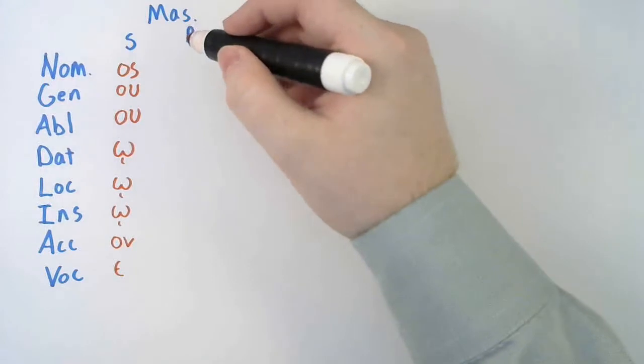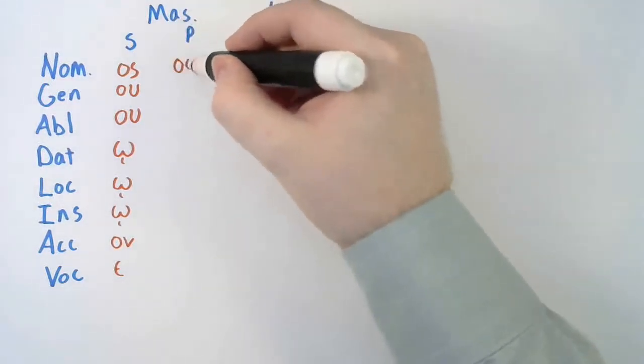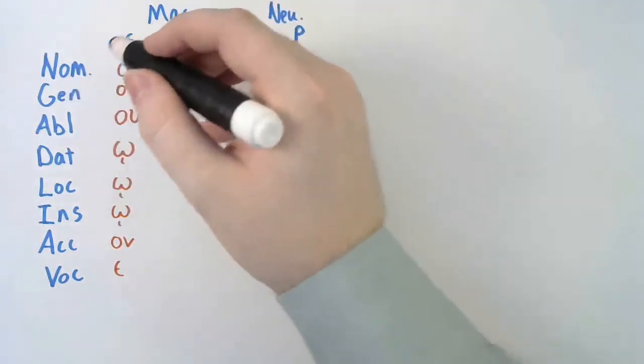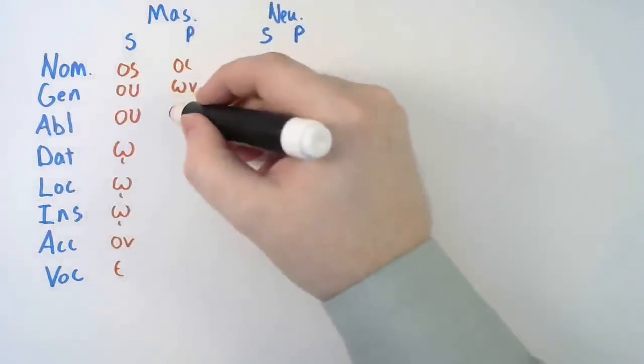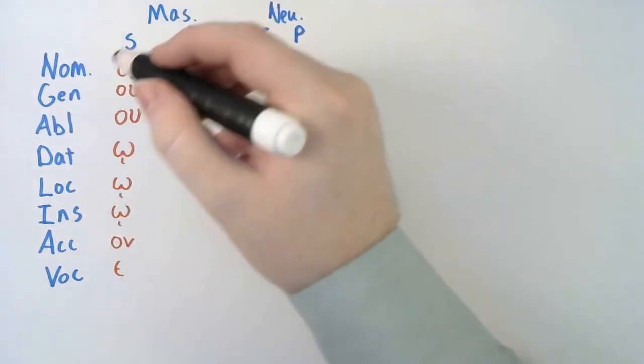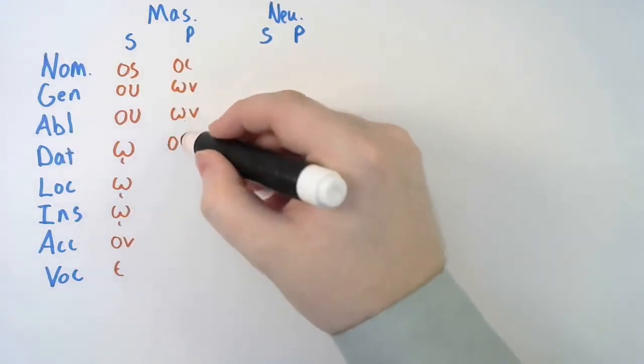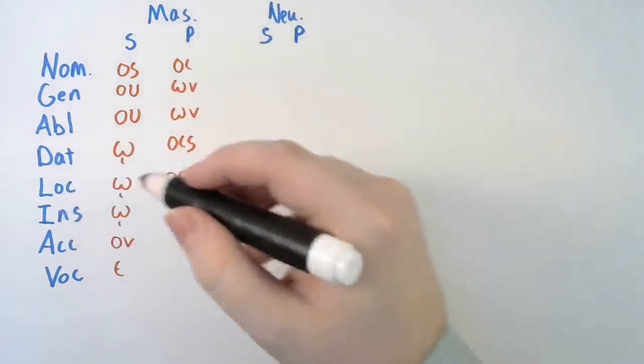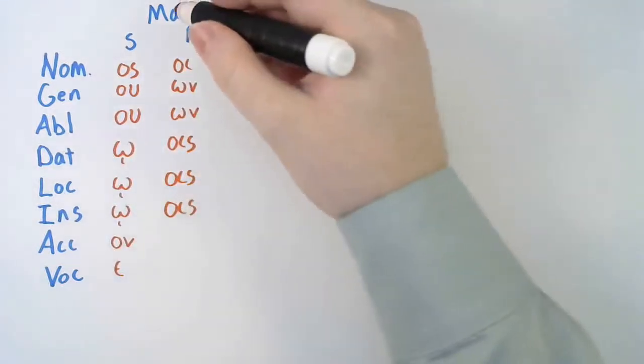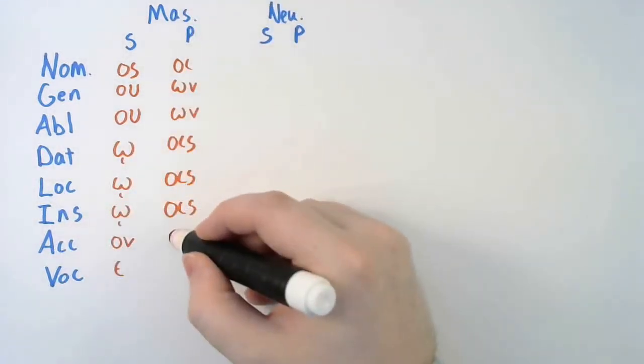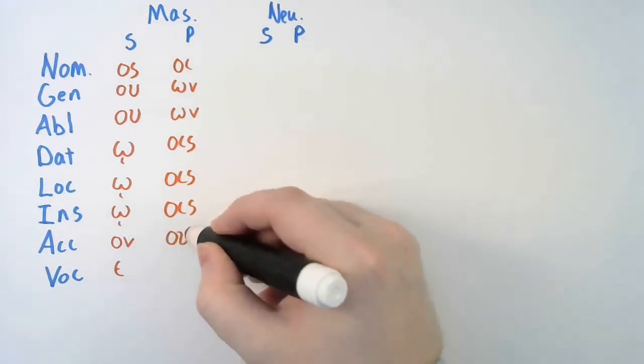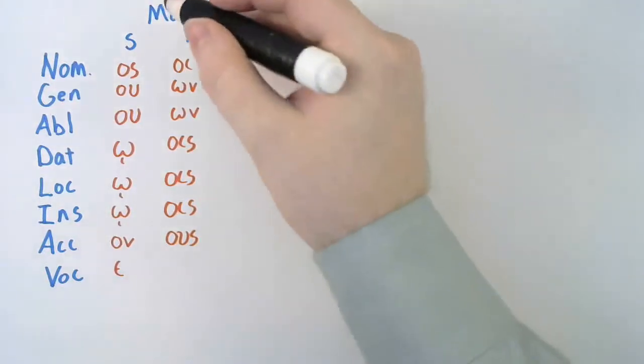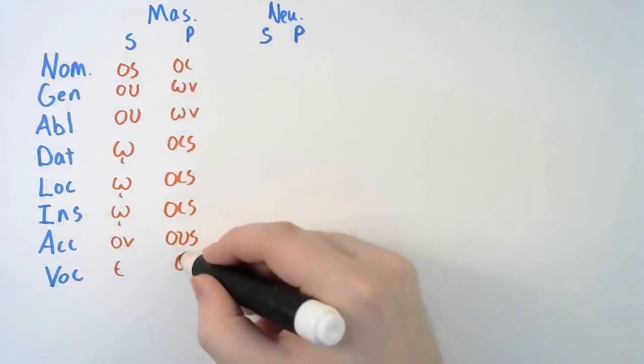Masculine plural nominative is oi. Masculine plural genitive is on. Masculine plural ablative is on. Masculine plural dative is ois. Masculine plural locative is ois. Masculine plural instrumental is ois. Masculine plural accusative is ous. My brain just stopped there and said, wait a minute, what chart am I on? Masculine plural vocative is oi.